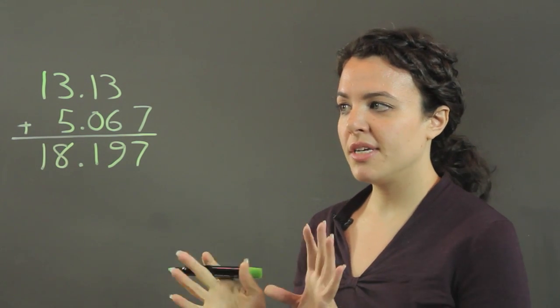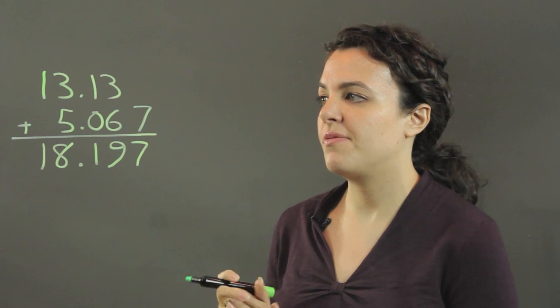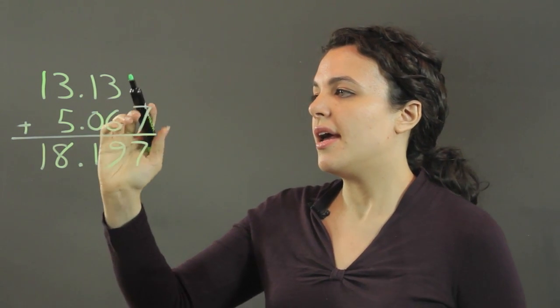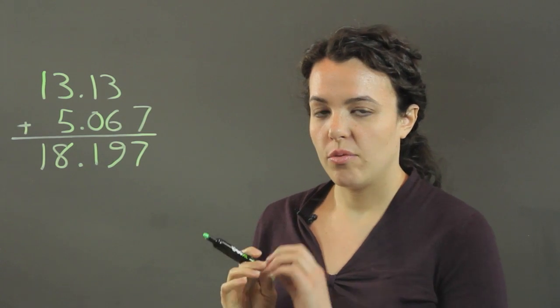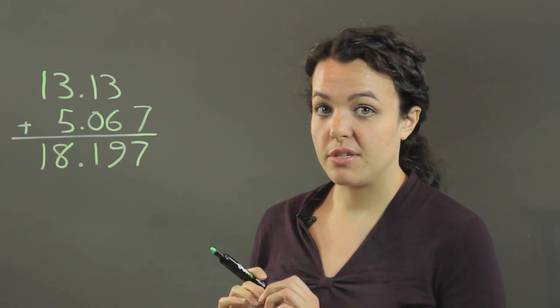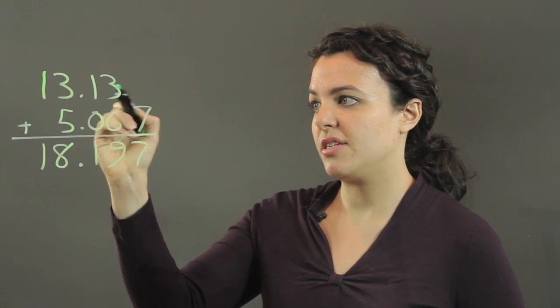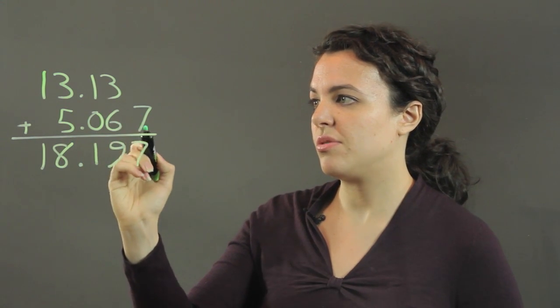Then what you look at is I'm only caring right now about the significant figures on the right hand side of the decimal. And you go by whichever number has the fewest sig figs, which would be this top number, which only has 2, whereas this has 1, 2, 3.